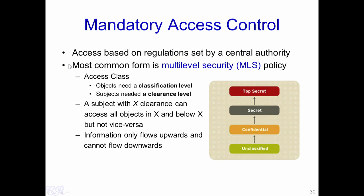Now let us come to the Mandatory Access Control mechanism. The access policies here are based on regulations set by a centralized authority. The most common form is the MLS or multi-level security policy, which has several access classes: unclassified, confidential, secret, and top secret. Every object in the system needs a classification level and every subject needs a clearance level — also one of these four. A subject with clearance x can only access all objects at x and below x; information can only flow upwards but cannot flow downwards. For example, a user with clearance secret can access secret, confidential, and unclassified objects, but not top-secret objects.